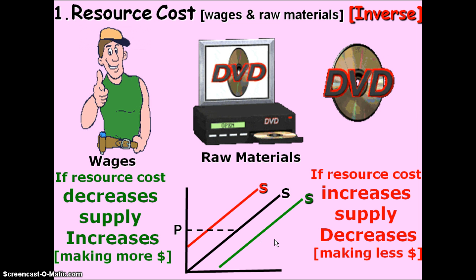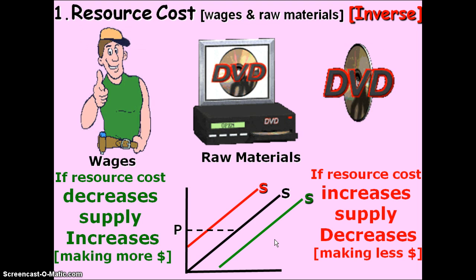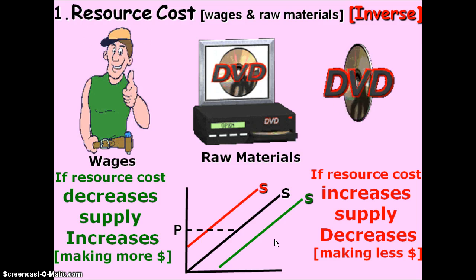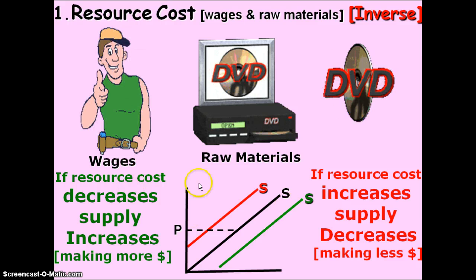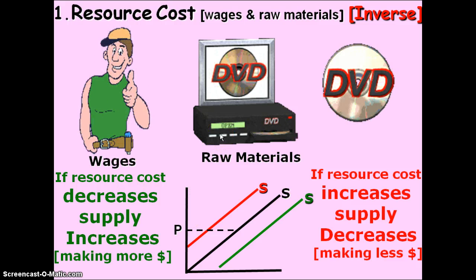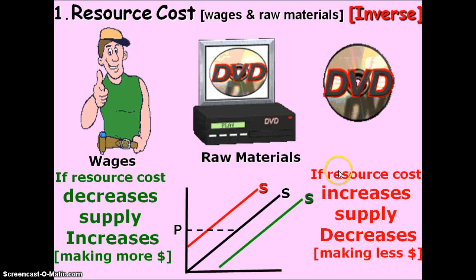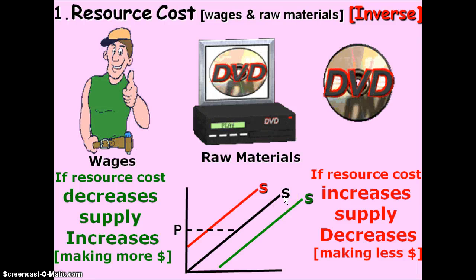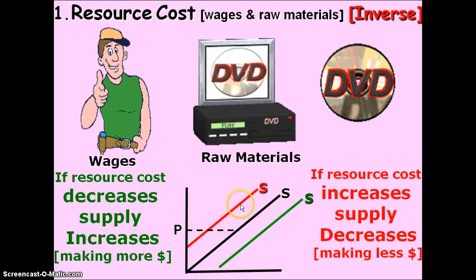While the law of supply states that I'm going to produce more of the things that I can get a higher price for, there are some factors that would allow me to produce more or less of something — even if the same price is going to be charged to the consumer in the market. The first of which would be the cost of raw materials. If I have to pay more for the raw materials that go into my finished product, if I have to pay more for the input costs, then obviously I'm not going to be able to supply as much of that product. The price isn't changing, but my supply would move to the left — it would move inward.